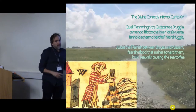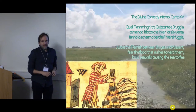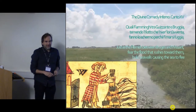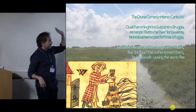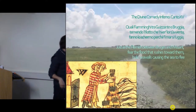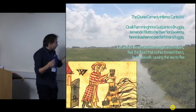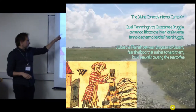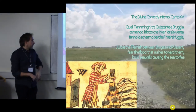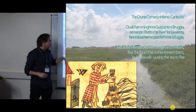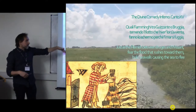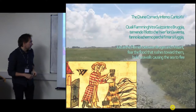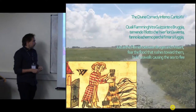It's not the Dutch but the Flemish who were known for building dikes in the medieval time. Dante — not reading Italian but knowing the Flemish — describes them as the people who fear the floods that rush towards them, and who build sea walls causing the sea to flee.